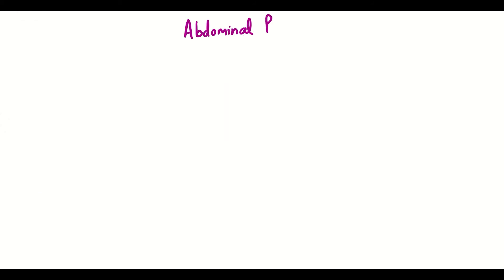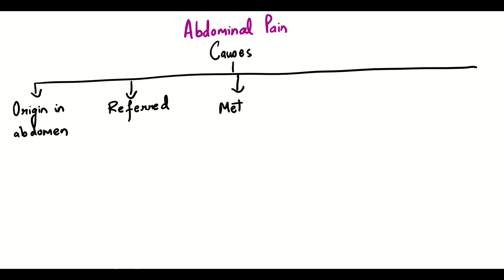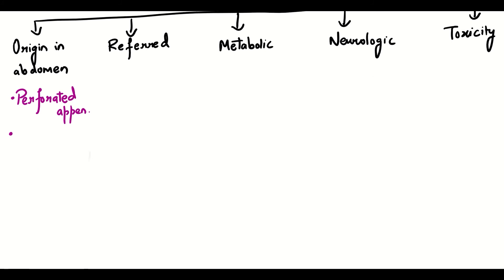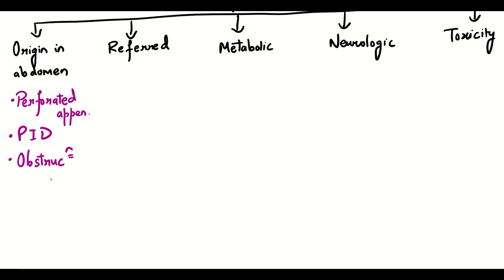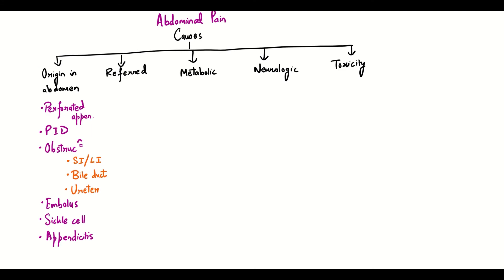Let's discuss the important causes of abdominal pain. Pain which originates in the abdomen, or it might be referred, or pain due to metabolic diseases, neurologic diseases, or various toxicities can lead to pain in the abdomen. Starting with origin in the abdomen: a perforated appendix, pelvic inflammatory disease, obstruction of the intestines or the bile duct or the ureter, then an embolus or a sickle cell crisis or appendicitis will lead to pain in the abdomen. Moving on to the referred pain: an acute MI, myocarditis, endocarditis or pericarditis or congestive heart failure, pulmonary embolism or pneumothorax can give a referred pain to the abdomen.